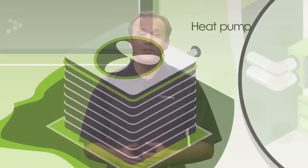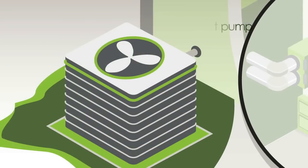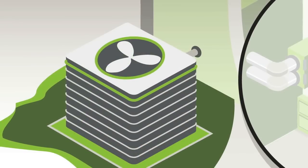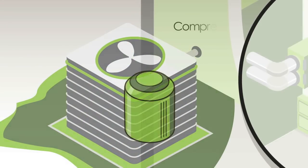Some air conditioning systems can also be used to heat your home. These are referred to as heat pumps. The process we just discussed is simply reversed, and the same three basic components are used.